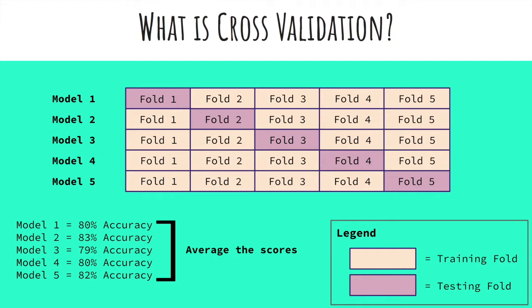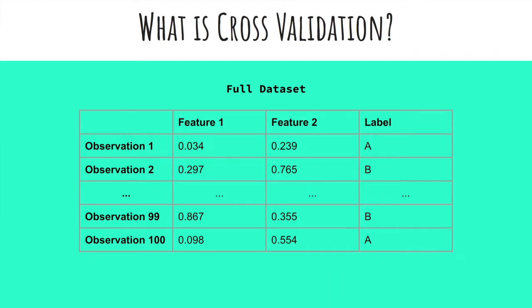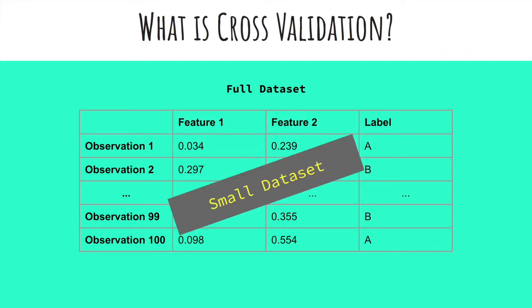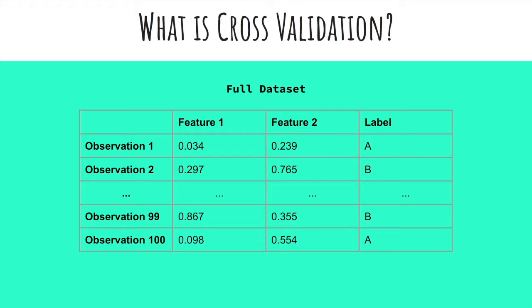The significance of cross-validation is that I can average those scores to get a more accurate evaluation. In this case, I return a cross-validation accuracy of 80.8%. The most common reason we use cross-validation is in scenarios where we have a limited amount of data. Consider we have 100 observations in our data set — we want to use as many training observations as possible, considering we already have such a small data set.